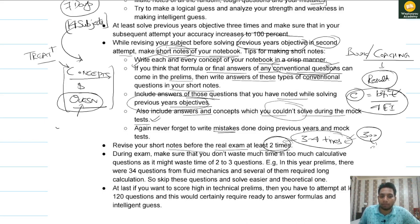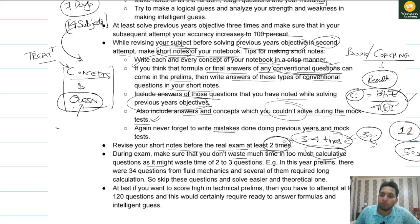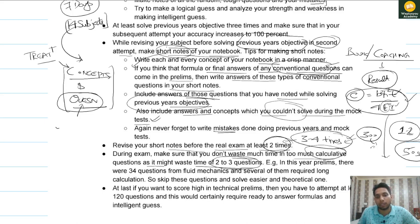During the exam, make sure you don't waste too much time on heavily calculated questions. For example, if a question gives you b, h, t, E, and I values and asks you to calculate — that will take a minimum of one to two minutes, but we only have 50 seconds. So such questions should be attempted later, after finishing all easy questions first. One such question can consume the time equivalent of two to three easier questions, so skip it initially.